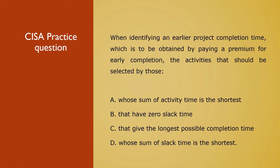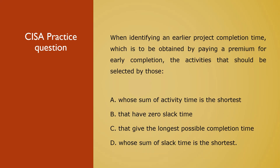Third question: When identifying an early project completion time, which is to be obtained by paying a premium for early completion, the activity should be selected by those who's: (A) whose sum of activity time is the shortest, (B) those that have zero slack time, (C) that give the longest possible completion time, (D) whose sum of slack time is the shortest. This question relates to Domain 3, specifically project completion and progress relating to CPM and PERT. The key concept is slack time.